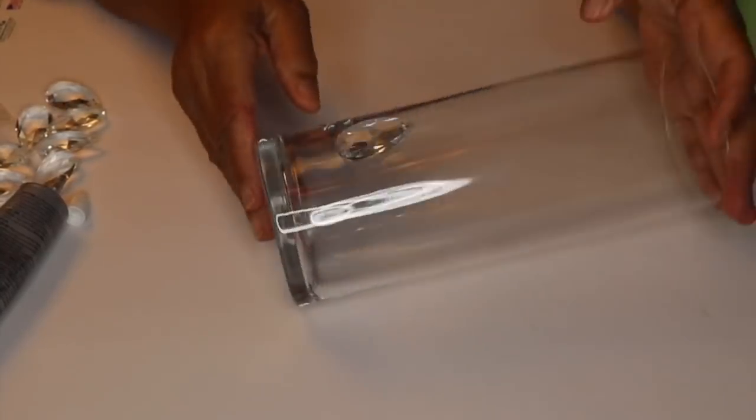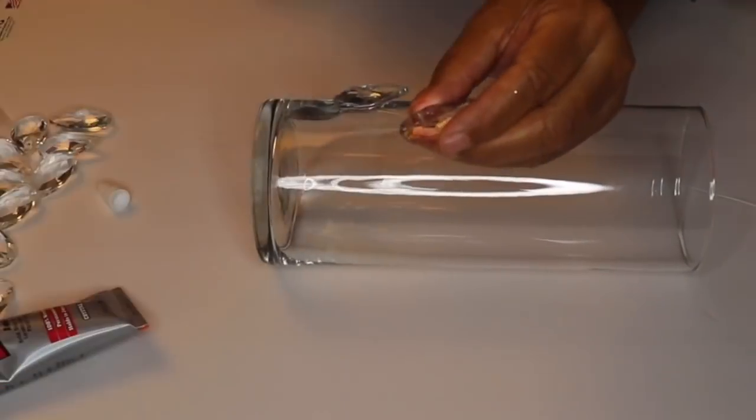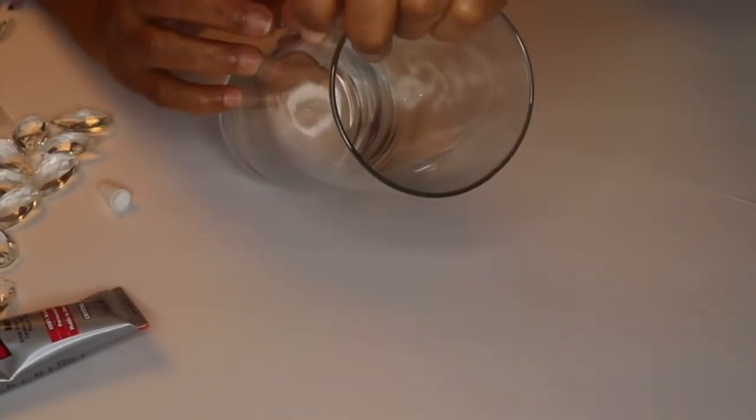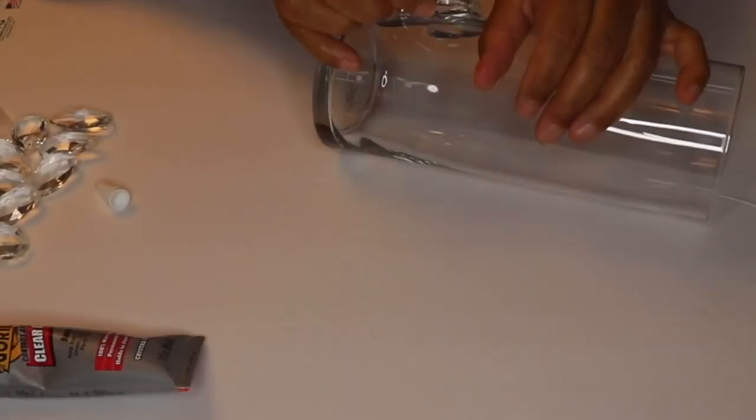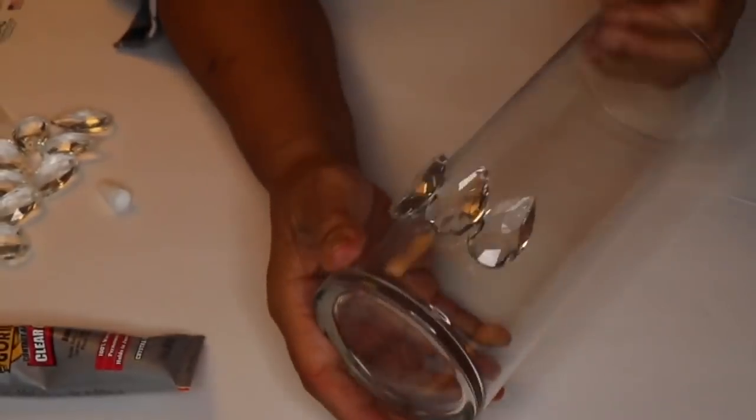And this is what it looks like after I put the first pendant in place. So now what you want to do is repeat this 13 more times. Yes, it's going to take 14 pendants to go around the first time. I'll continue to add the pendants to the vase, come back and then move on to the next step.